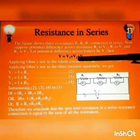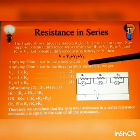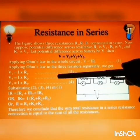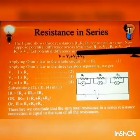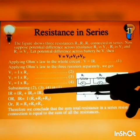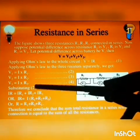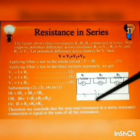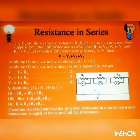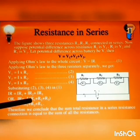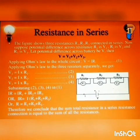We can put these values here. In place of V we can put IR, in place of V1 we can put IR1, in place of V2 we can put IR2, and in place of V3 we can put IR3. Then we can take I common and cancel I from both sides. So we get the total resistance or the equivalent resistance R equal to the sum total of all the resistances connected in series.